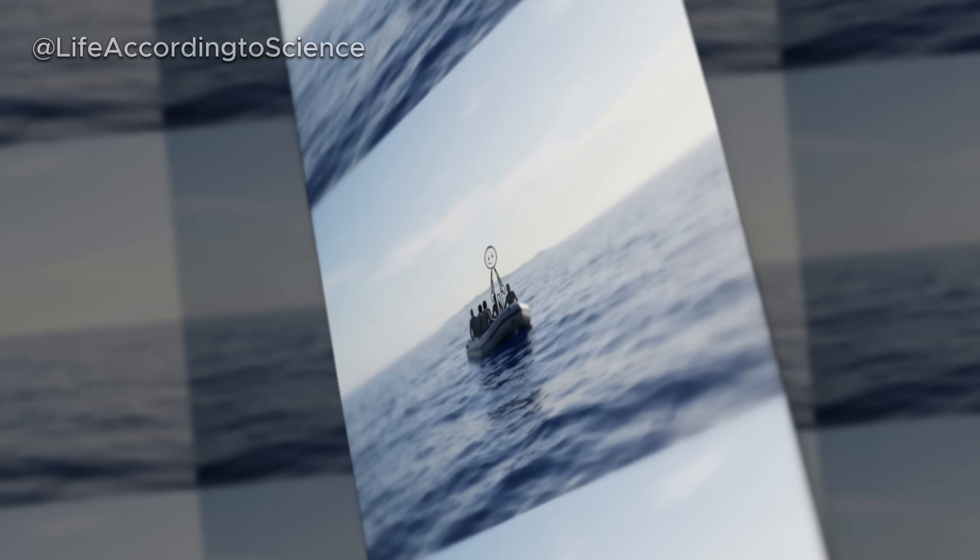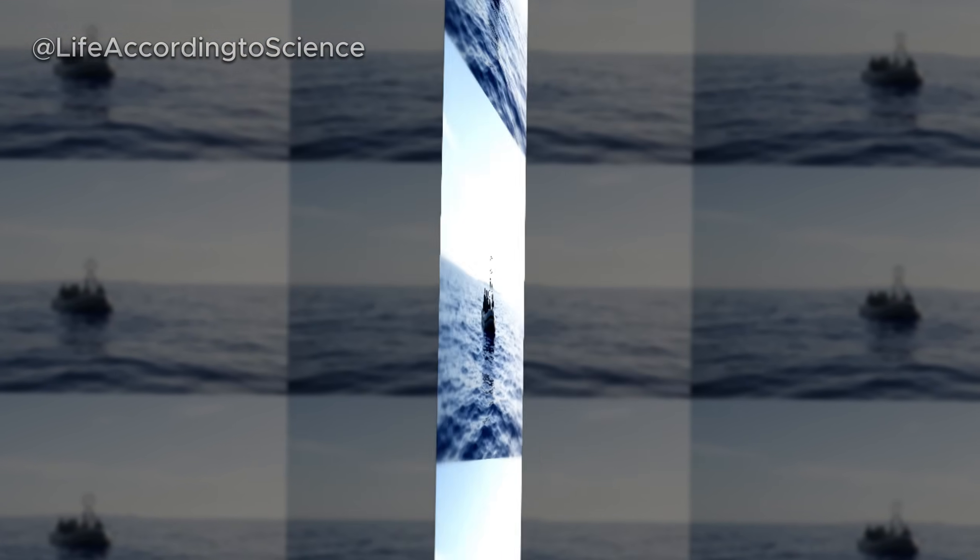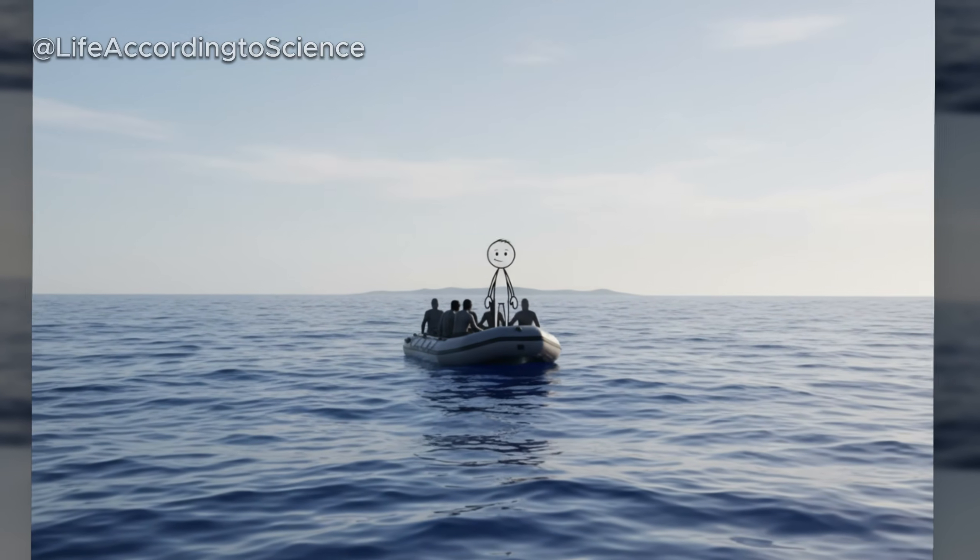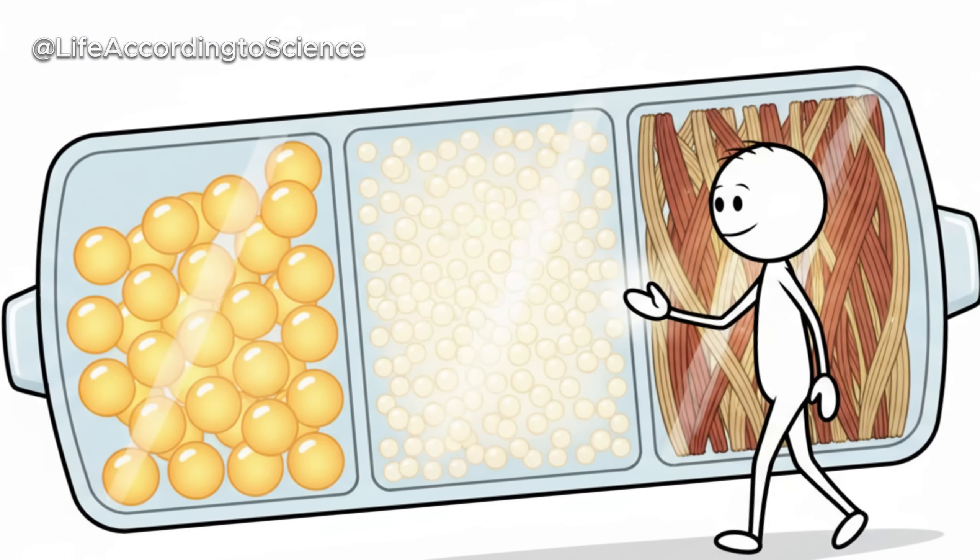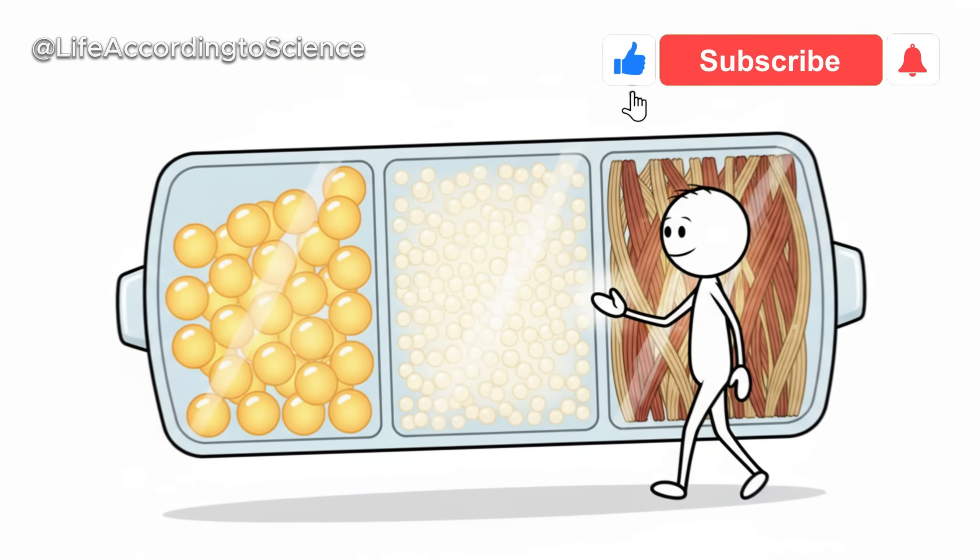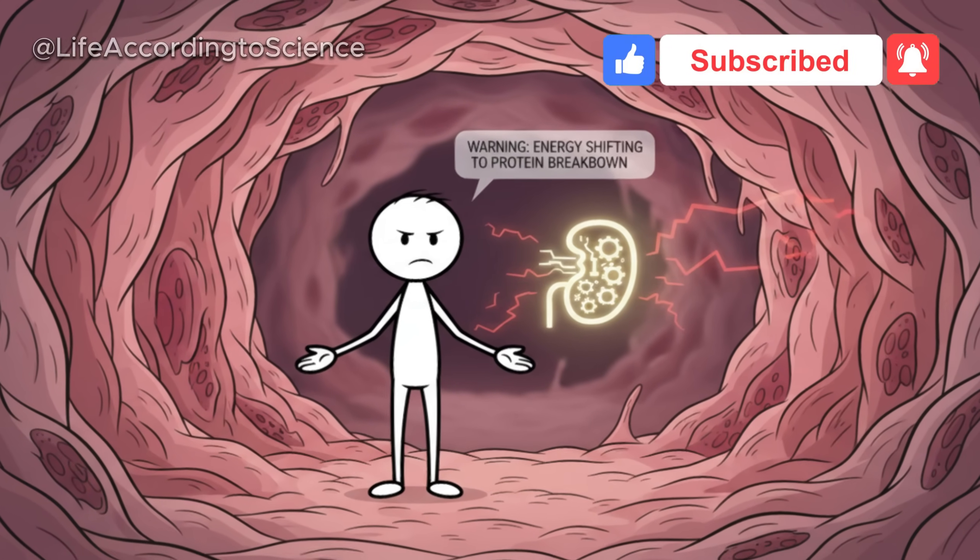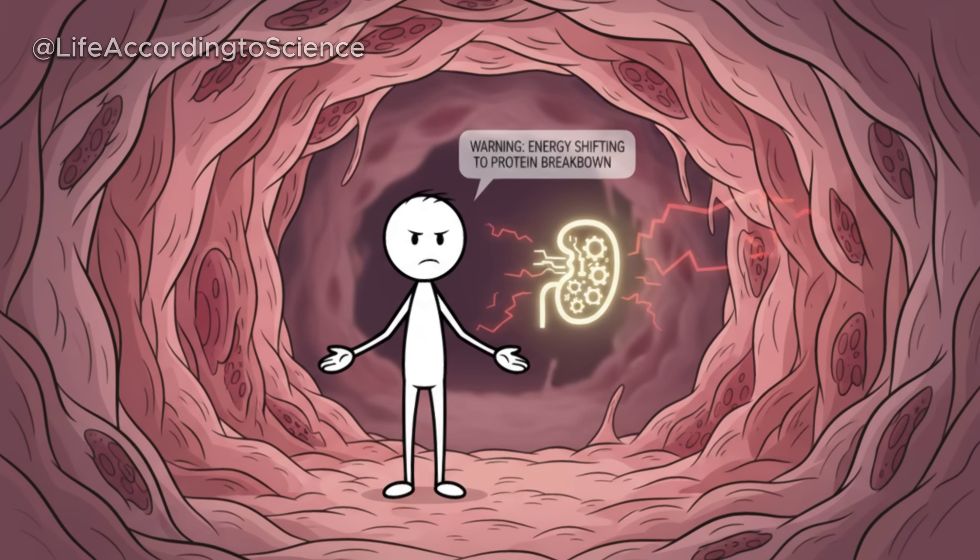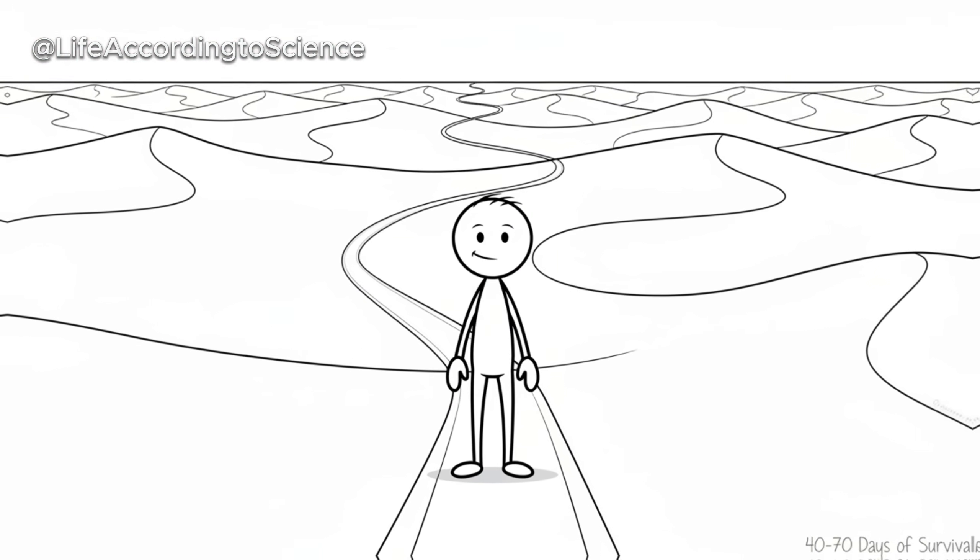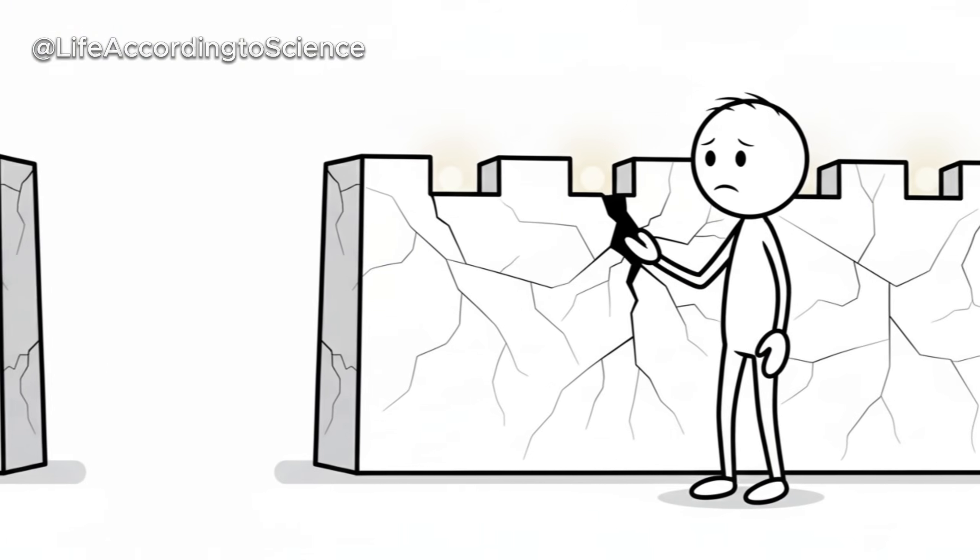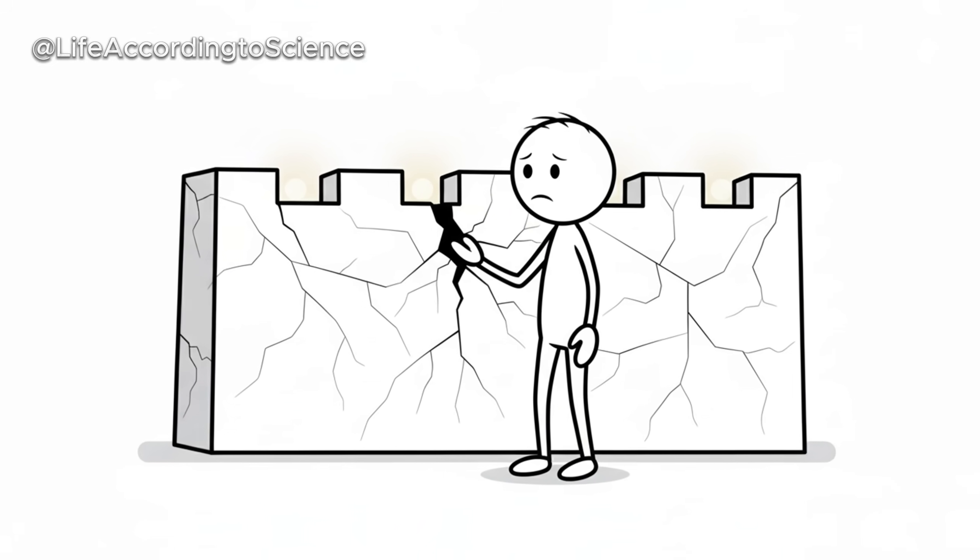Other cases, like shipwreck survivors or hunger strikers, show similar patterns. During long periods without food, the body first consumes glycogen, then fat, and finally, when no other option remains, muscle tissue. The true danger comes when protein breakdown becomes the main energy source. That's when organ function begins to fail. Medical science suggests that in ideal hydration conditions, a healthy human can survive between 40 and 70 days without food. However, this is far from sustainable. The longer the fast continues, the more the immune system weakens, and the body begins to sacrifice vital proteins just to stay alive.